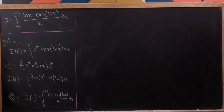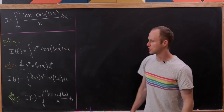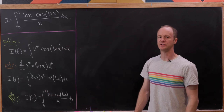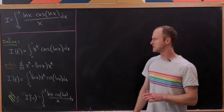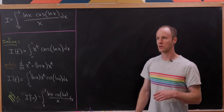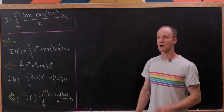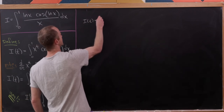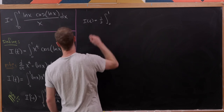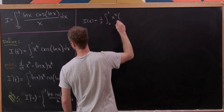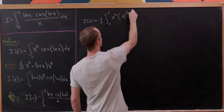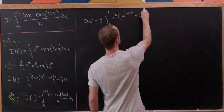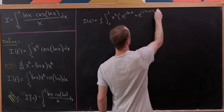Keeping that in mind, let's calculate our I(t) integral. Perhaps what I'll do is rewrite the cosine function using the complex exponential. We'll have I(t) equal to one half times the integral from 0 to 1 of x to the t times e to the i times ln(x) plus e to the minus i times ln(x), dx.